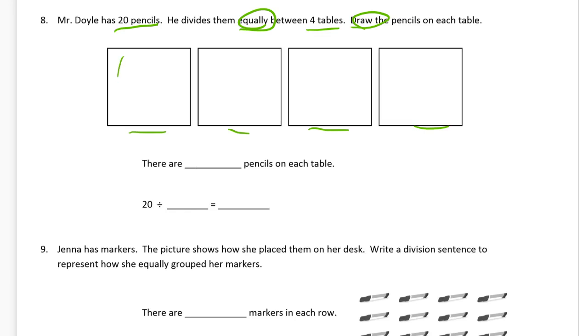Twenty of them, right? One, two, three, four, five, six, seven, eight, nine, ten, eleven, twelve, thirteen, fourteen, fifteen, sixteen, seventeen, eighteen, nineteen, twenty pencils.